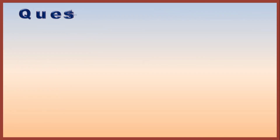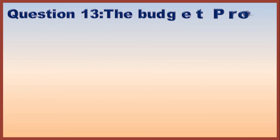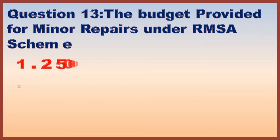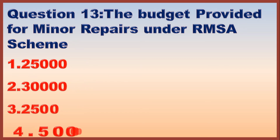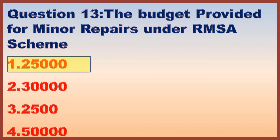Question 13. What is the budget provided for minor repairs under the RMSA scheme? Correct answer is option 1: 25,000 rupees.